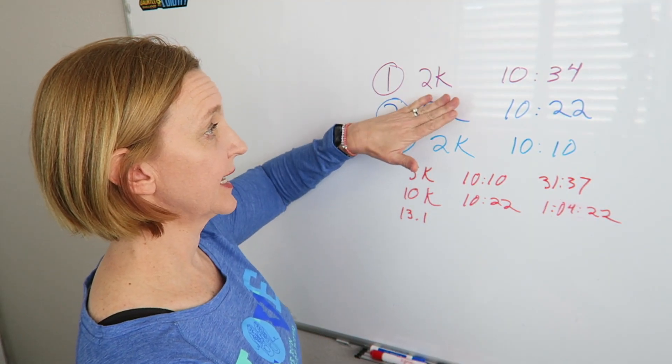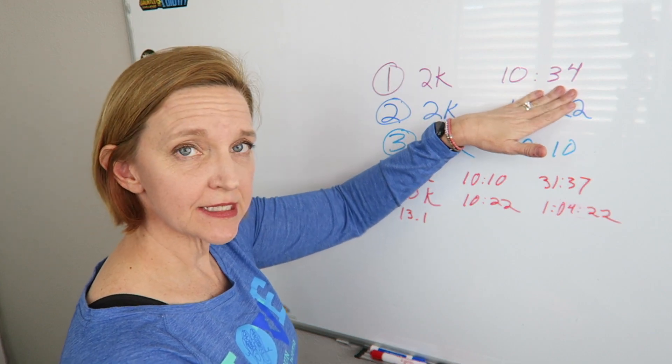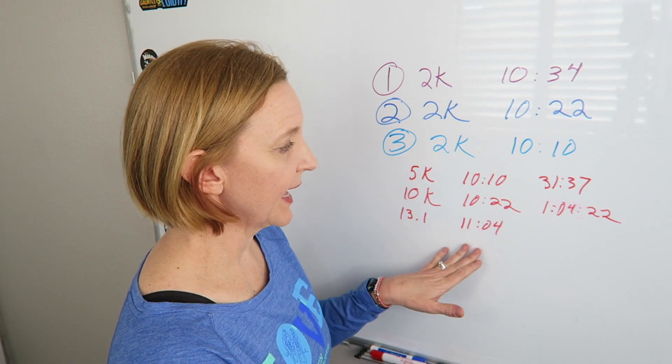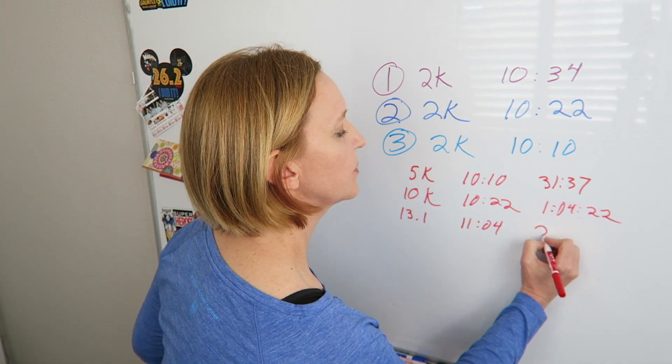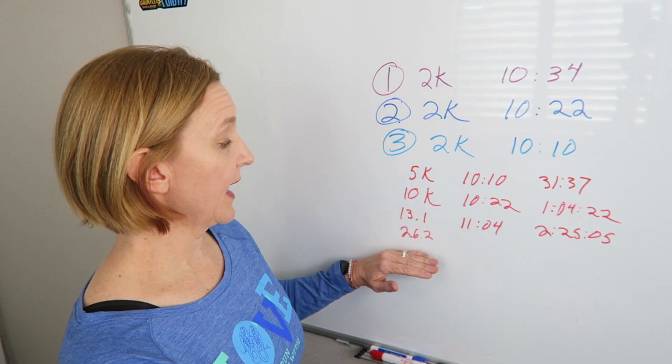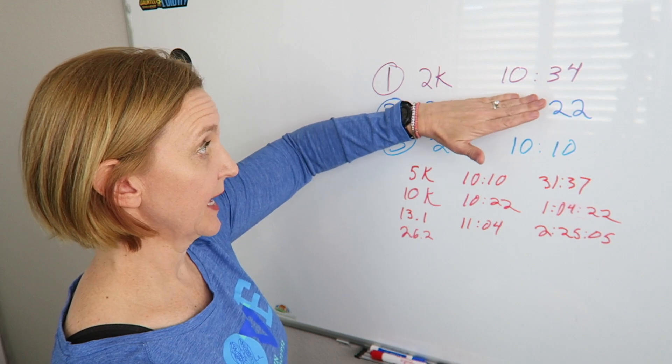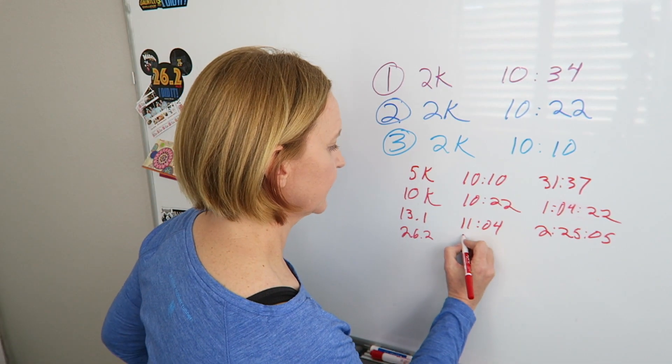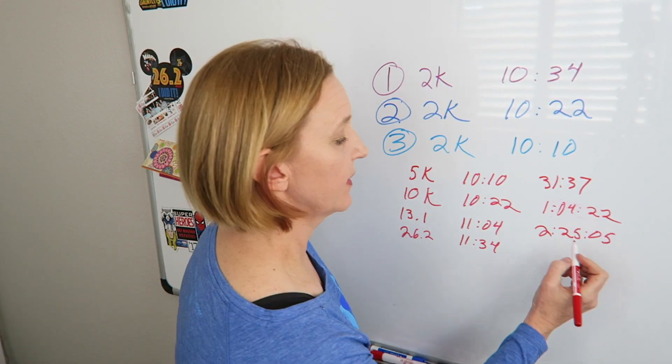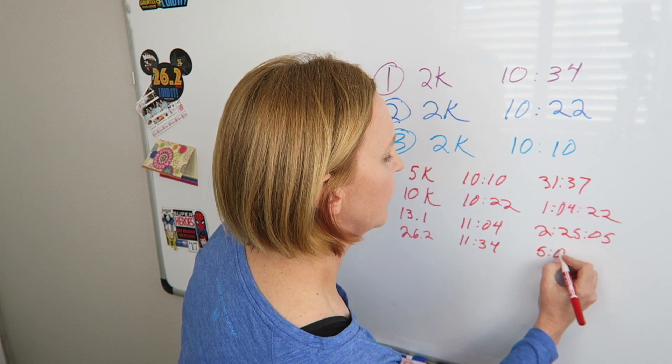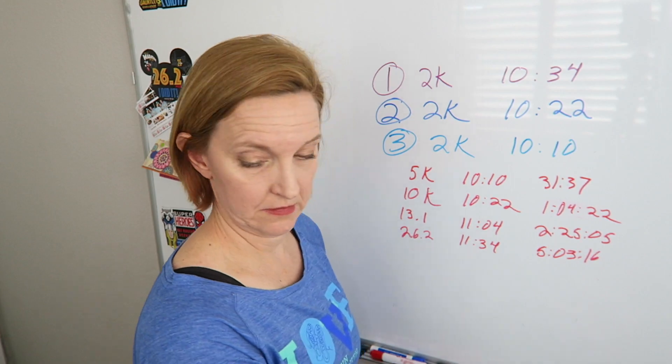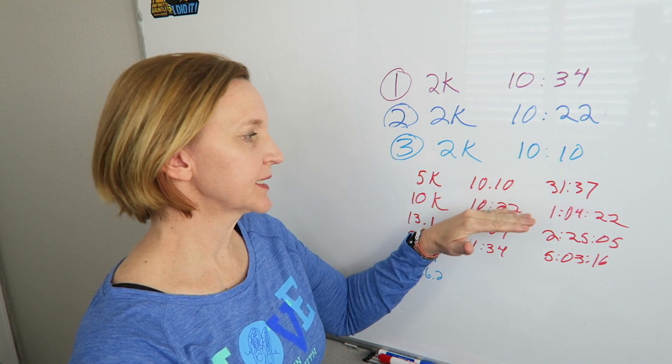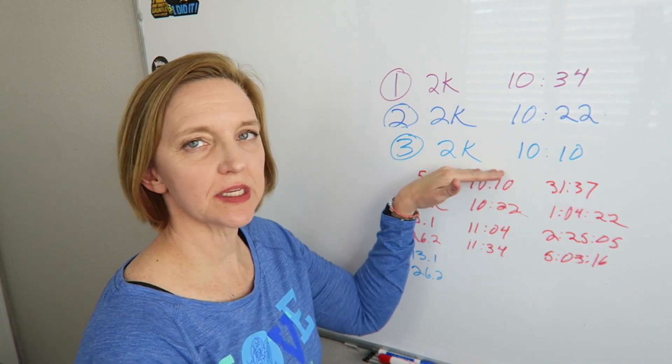For my half marathon time, I am taking this 2K average pace and adding 30 seconds to give me 11:04, which would give me a predicted finish time of 2:25:05. So now looking at the full marathon, I would take again, this first 2K average pace and add 60 seconds, which would give me 11:34, which would give me about a 5:04, right? Or 5:03:16. Right? Yeah. Okay. So basically using this data, you can find predicted times for all four of the common distances just based on this data.